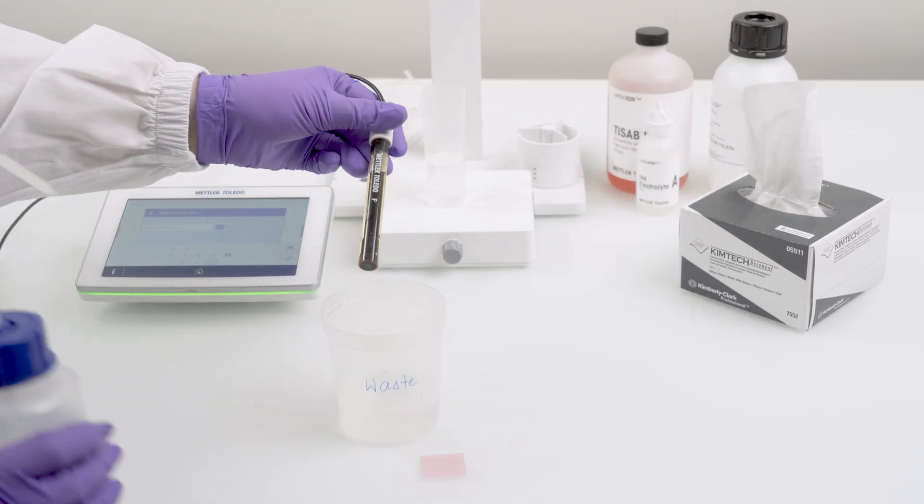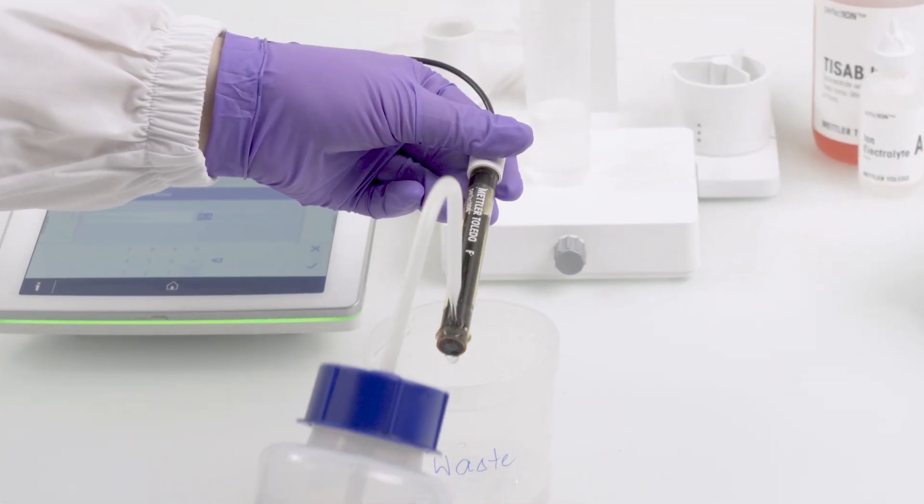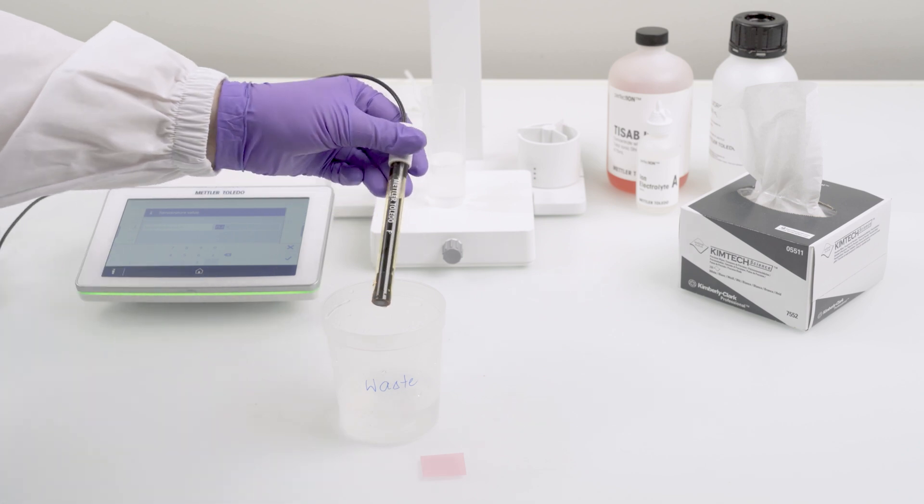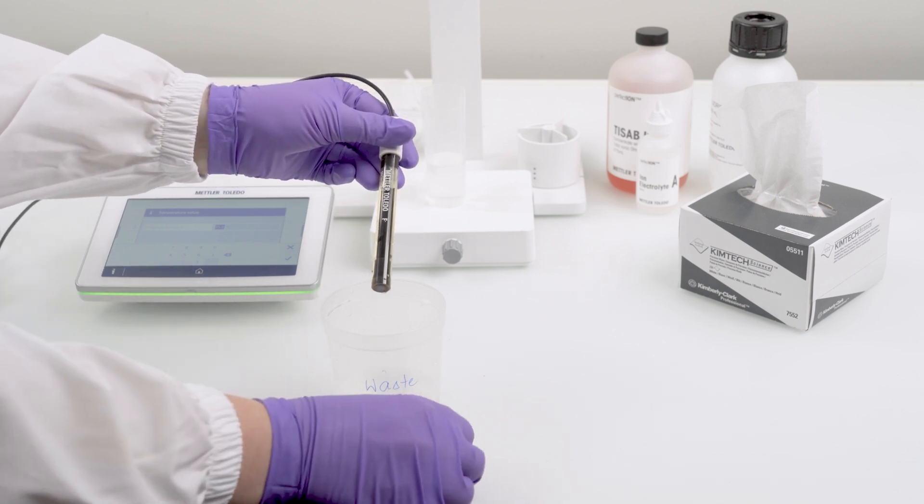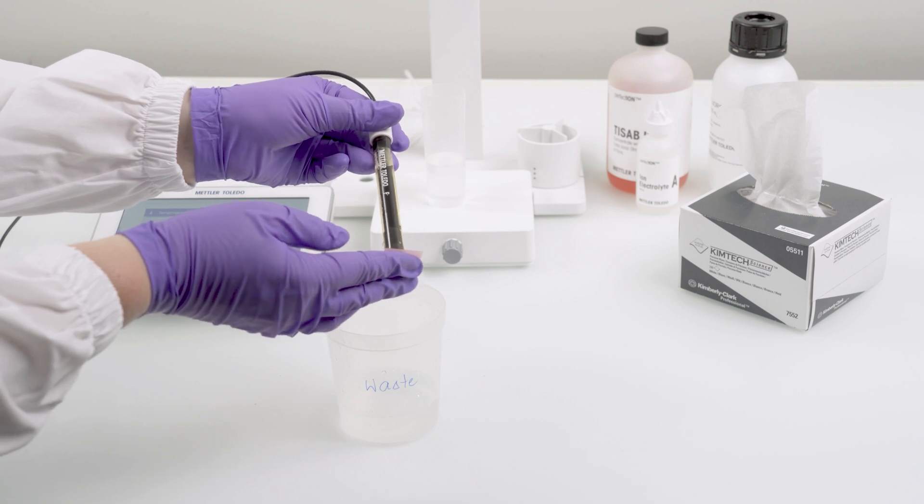For solid-state membrane sensors, start by rinsing with ethanol to remove any organic deposits. After rinsing, gently polish the surface with the fine emery paper that comes with the electrode to remove impurities.